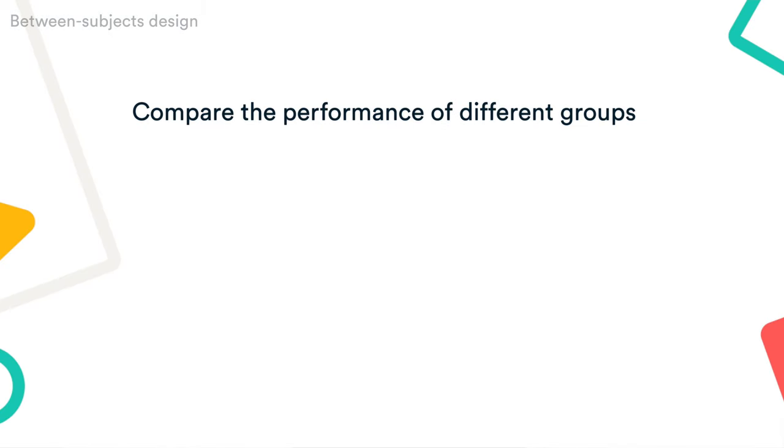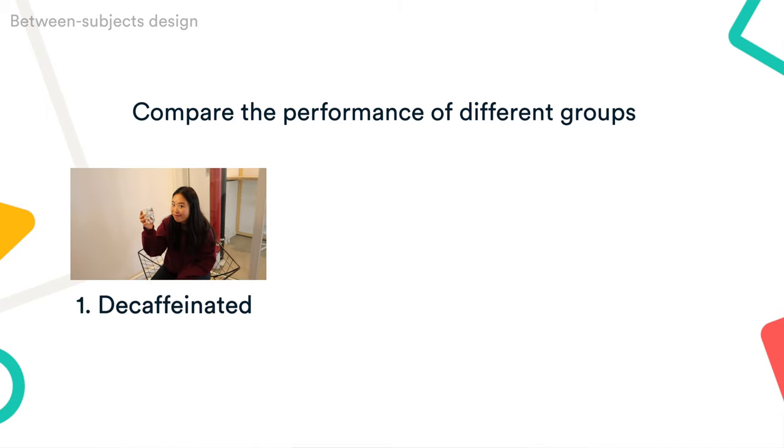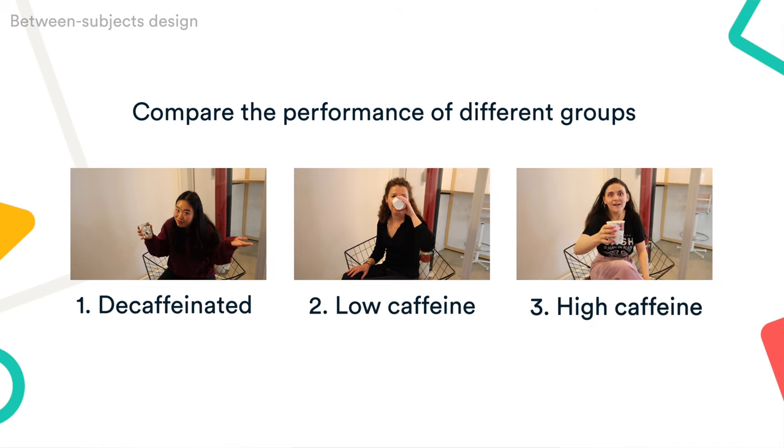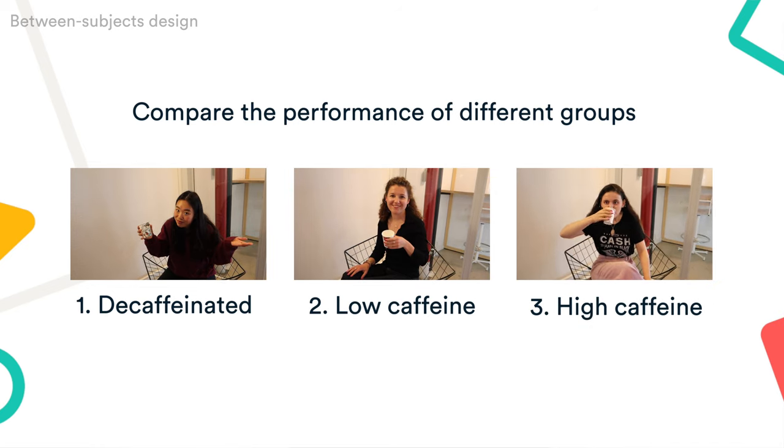A between-groups or between-subjects design means that each subject will only experience one condition. In our example, that means you have three groups: group 1 receives a decaffeinated drink, group 2 receives a low caffeine drink, and group 3 receives a high caffeine drink. Participants are placed into one of the three groups at random, and you compare the short-term memory performance of these different groups.